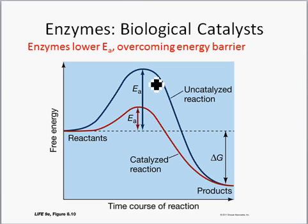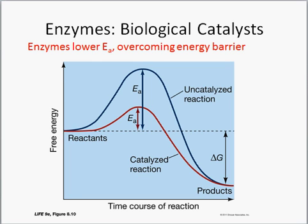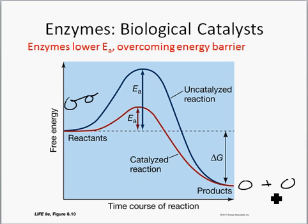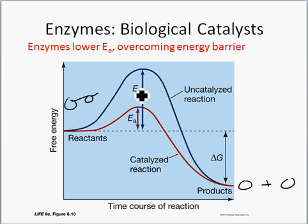So how does an enzyme work as a biological catalyst? Looking at this graph, the blue line represents a chemical reaction. Let's say we have a disaccharide made up of two monosaccharides that will be broken down into its subunits — an exergonic reaction going from reactants to products. For this to happen, a certain amount of energy must be put in to break the bond. That initial energy required for a chemical reaction is called activation energy, or E sub a.